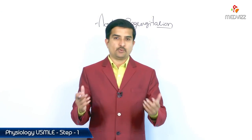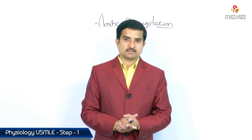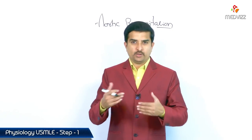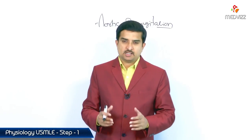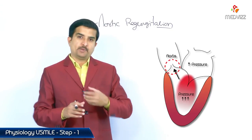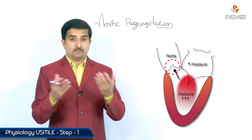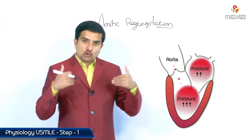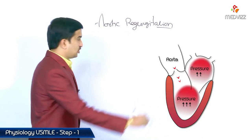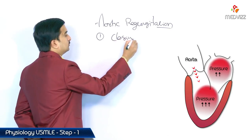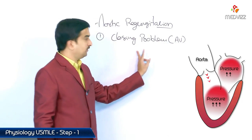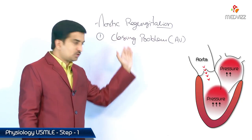Let us discuss aortic regurgitation. In valvular heart diseases, we have two types of valvular abnormalities: stenosis and regurgitation. In simple language, stenosis means an opening problem and regurgitation means a closing problem. Aortic regurgitation is the closing problem of the aortic valve, with a retrograde flow from the aorta to the left ventricle.